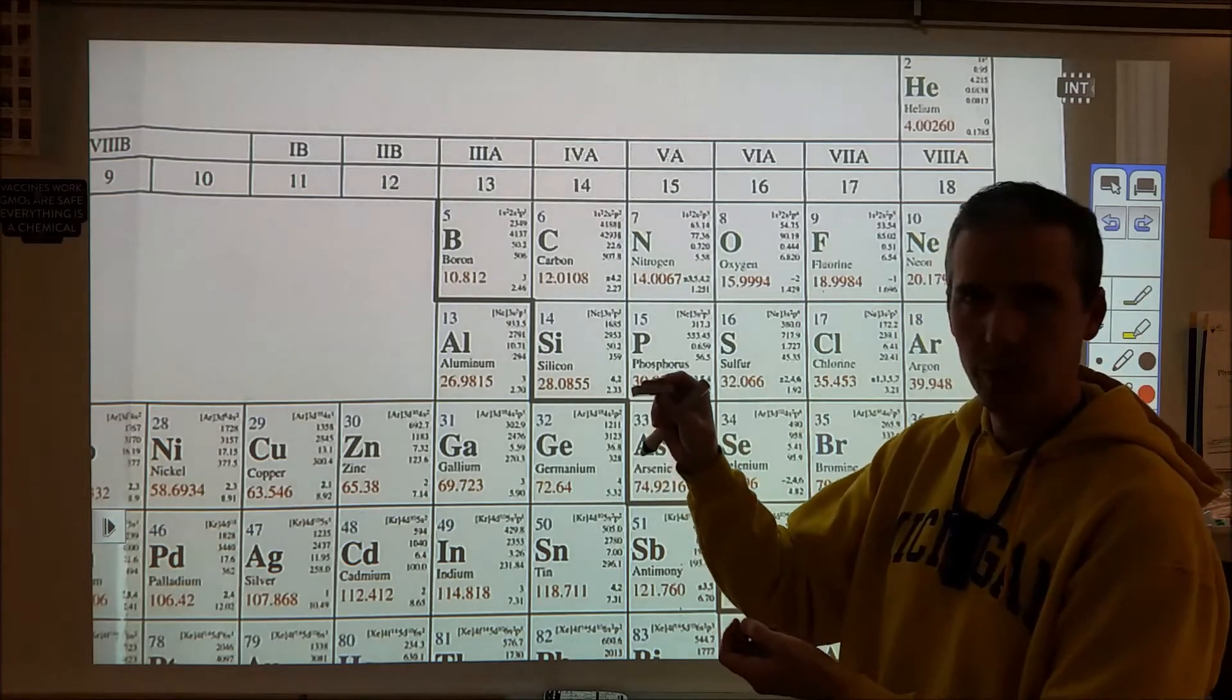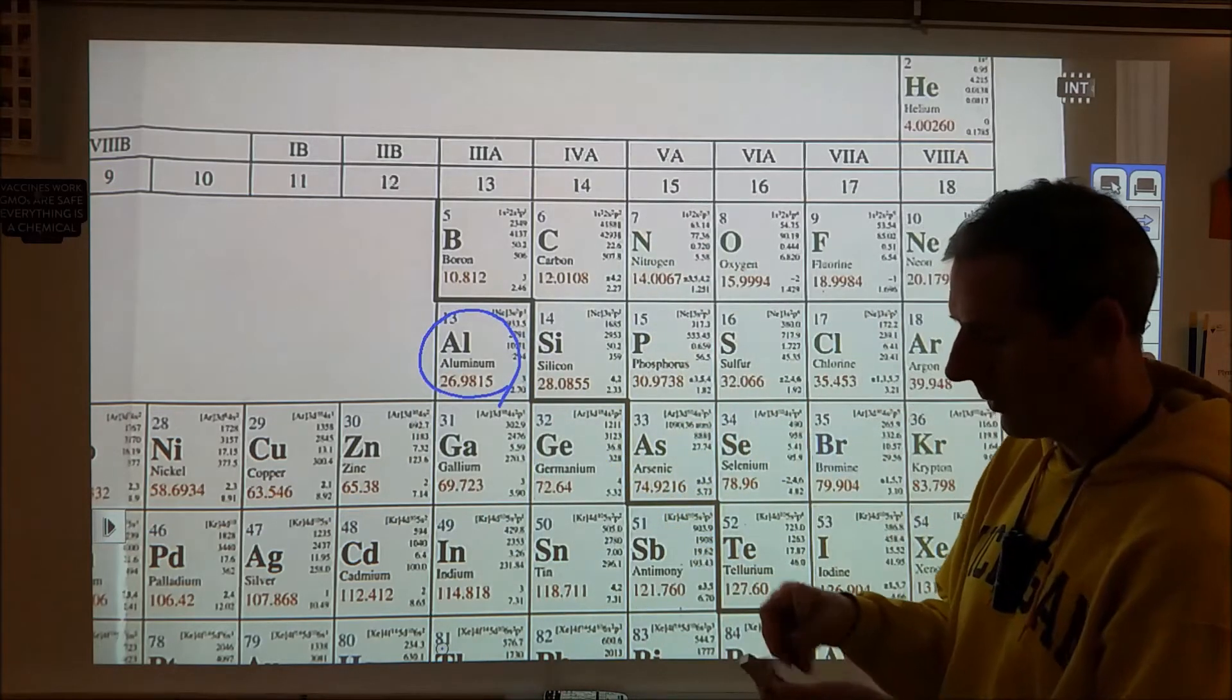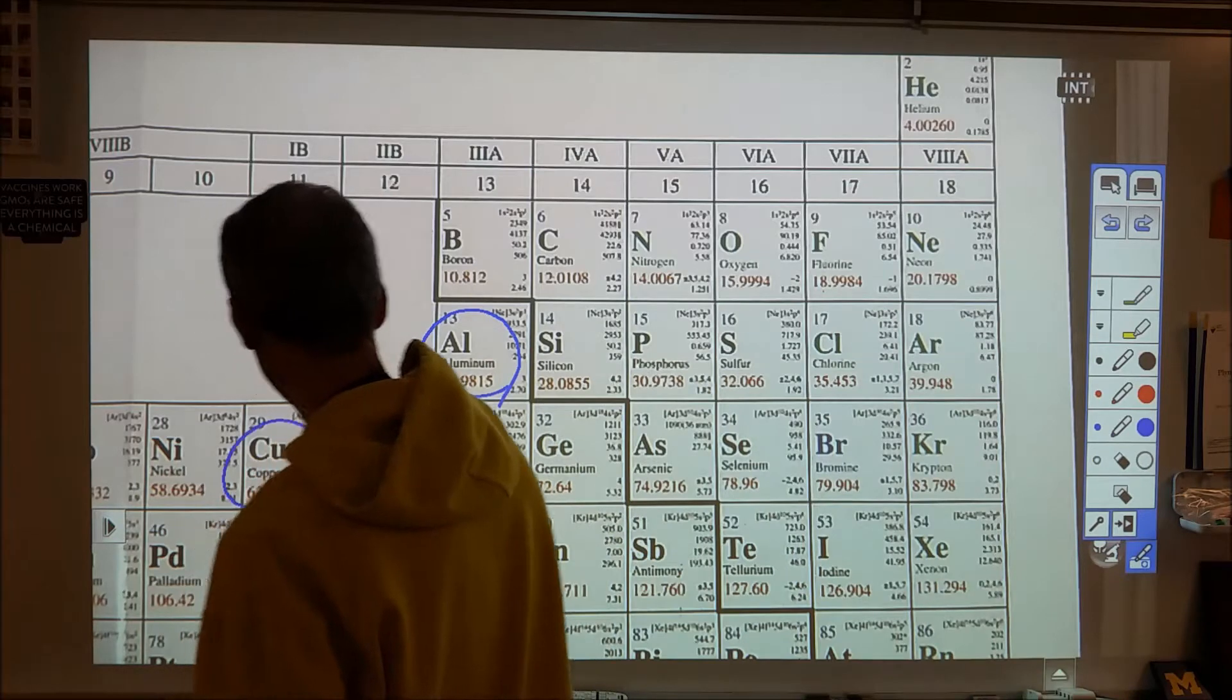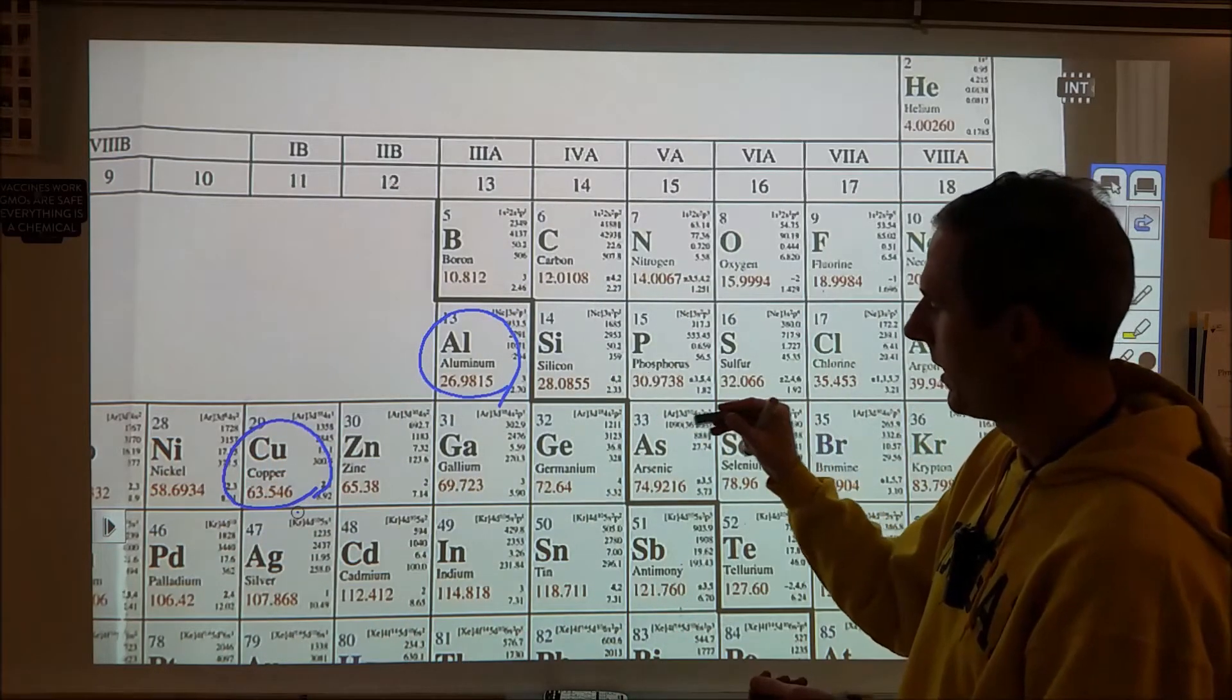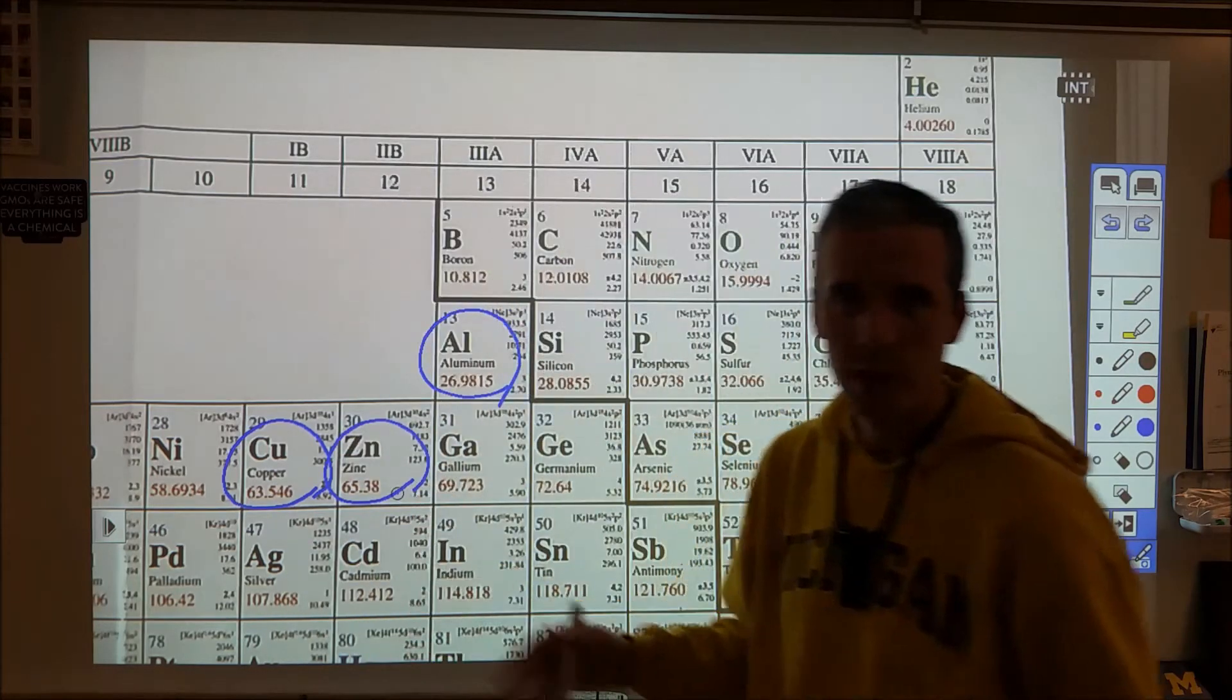All right, three different bars. This one right here is 26.98 grams of aluminum. This one right here is made out of copper and this one is 63.55 grams. And this one here is made out of zinc and it's 65.38 grams, give or take a little bit.